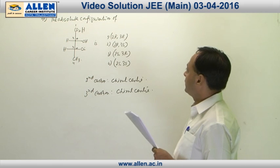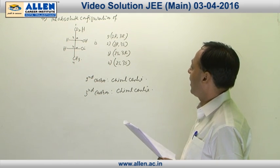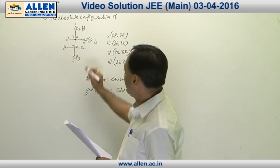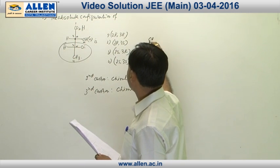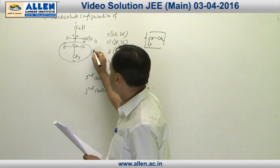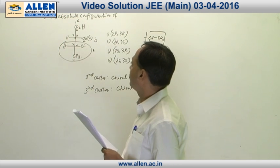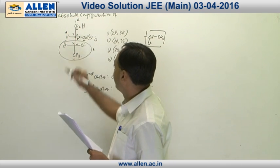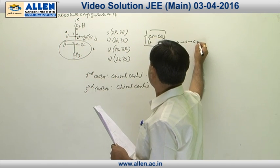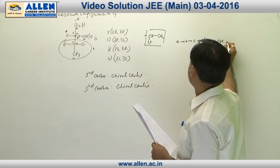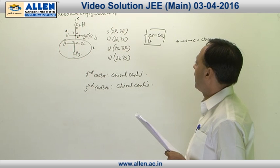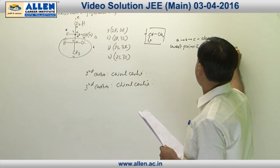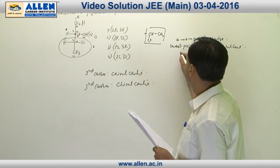Now let us look at the configurations around each chiral center. For this chiral center, the OH group has the highest priority A. The second highest priority is the entire system — that is actually CH(Cl) single bond CH3 — that part is B. Third priority, COOH is the third position, and H is the lowest priority group. So going A to B to C, it is observed to be clockwise. As it is clockwise and the lowest priority group is in the horizontal line, the configuration is S.